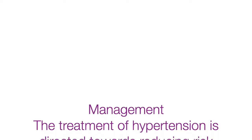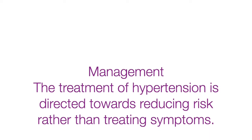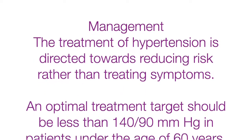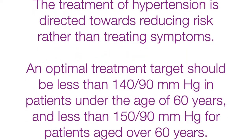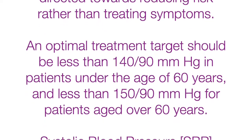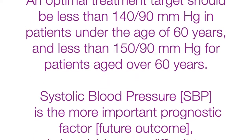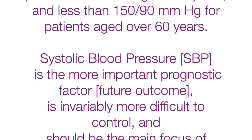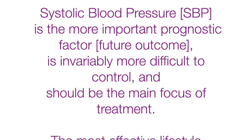Management: the treatment of hypertension is directed towards reducing risk rather than treating symptoms. An optimal treatment target should be less than 140/90 mmHg in patients under 60 years, and less than 150/90 mmHg for patients aged over 60 years. Systolic blood pressure is the more important prognostic factor, is invariably more difficult to control, and should be the main focus of treatment.